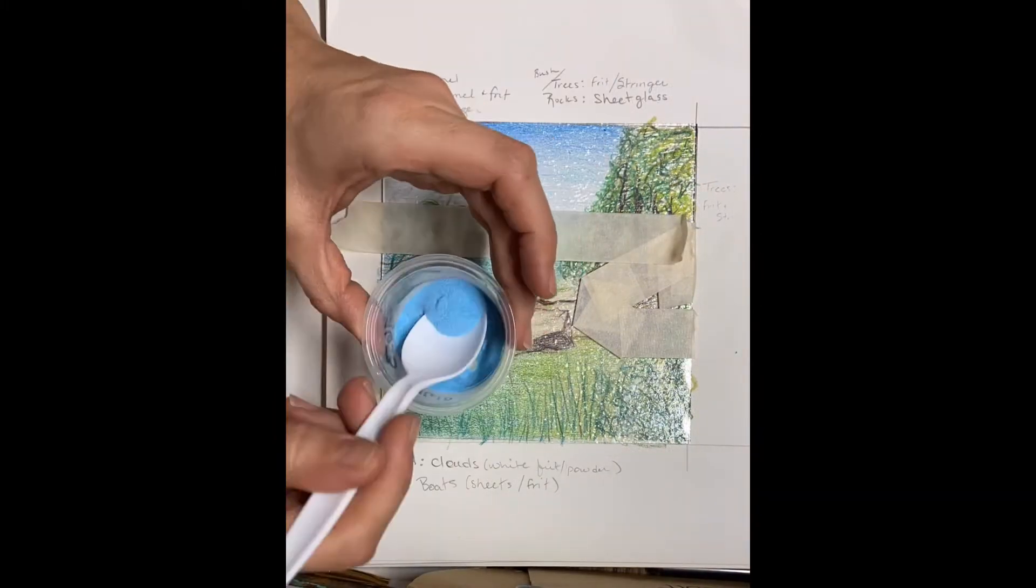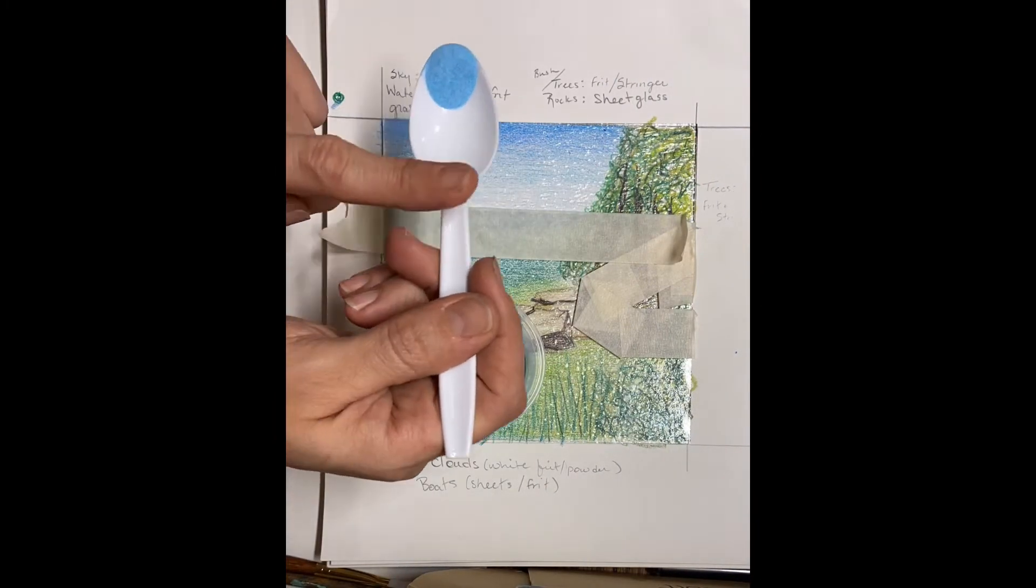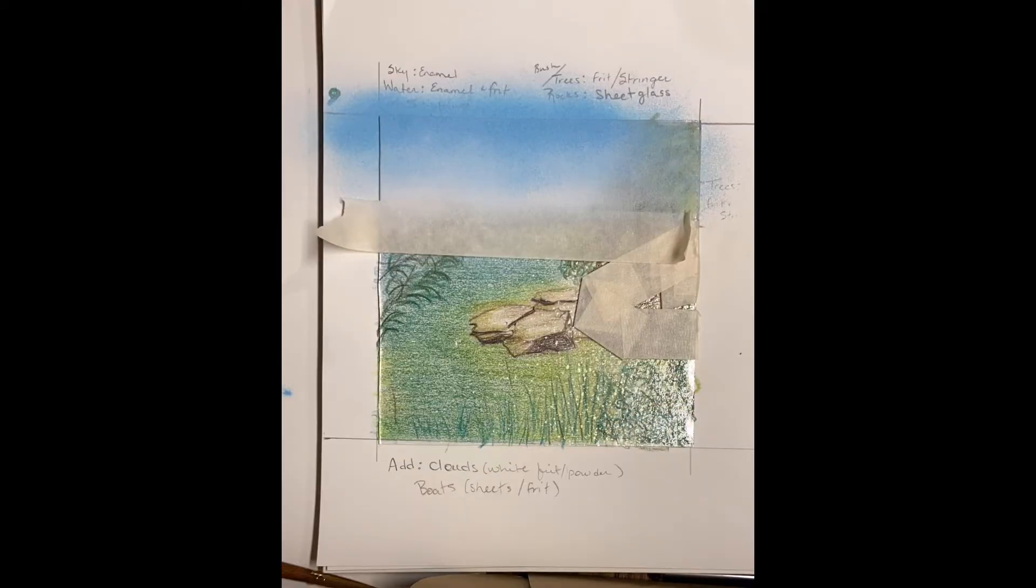So next I'm going to sprinkle a base layer. I will add another layer of glue to this and I just drip it carefully in there, and then I add a second layer of powder.